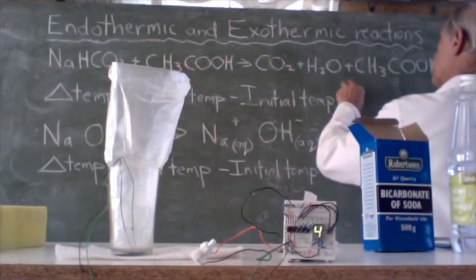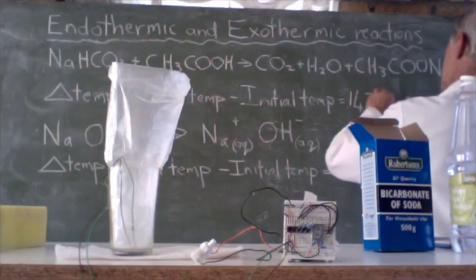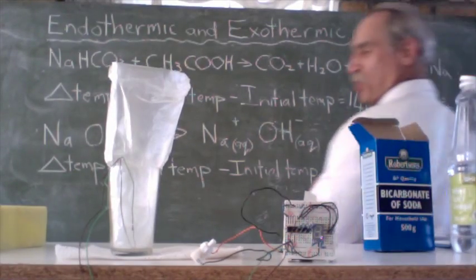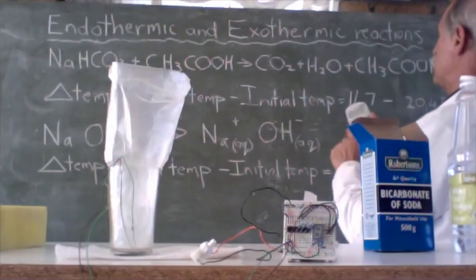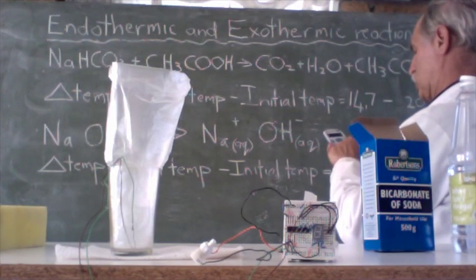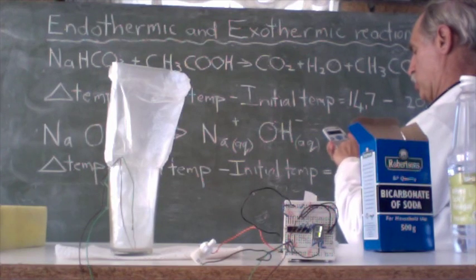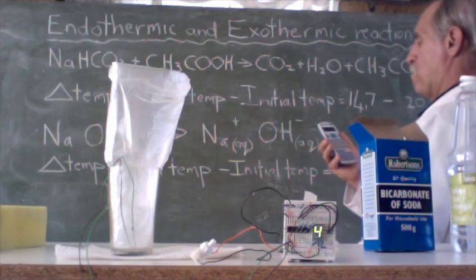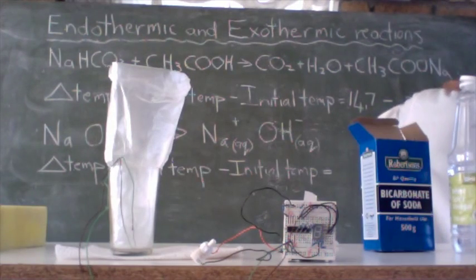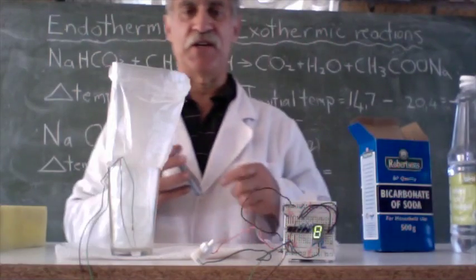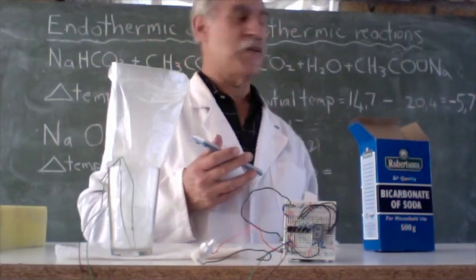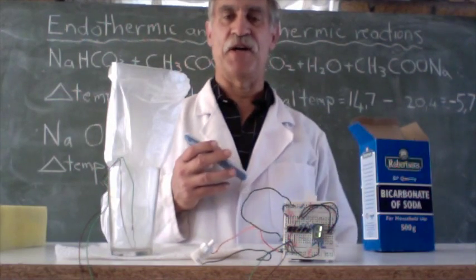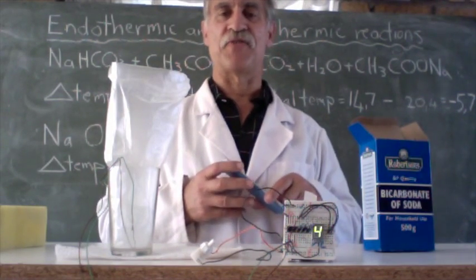So final temperature 14.7 minus 20.4 equals minus 5.7 degrees centigrade. And there, it's a negative number. Minus 5.7 degrees.